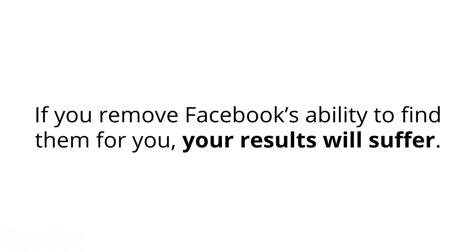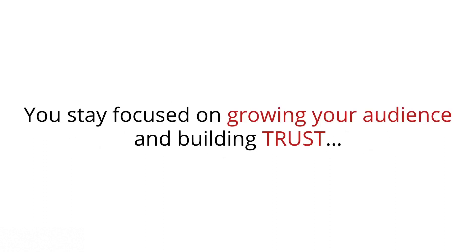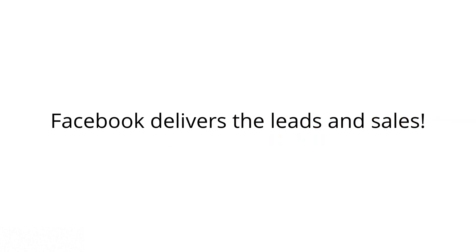So at that moment, on the right device at the right time, Facebook's going to show your ad for summer hats — if you're a hat company selling summer hats. Now, if you remove Facebook's ability to find the best path for you by over-targeting your ads and audiences, you're going to suffocate your results. This is your chance to let Facebook's crazy knowledge on user behavior, their pixel data, and their AI deliver you the very best leads and customers every time. Plus, it'll save you a ton of time because you just queue everything up and Facebook decides what ad to display to who at what time for you.